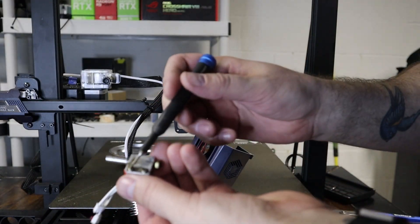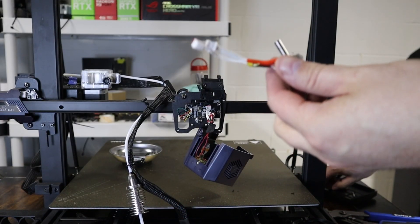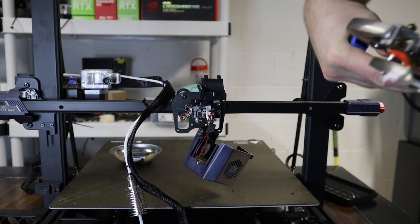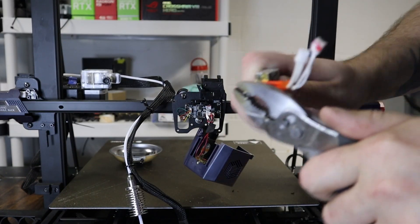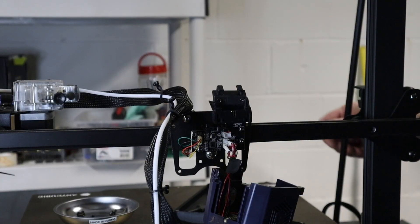After you get this out, there'll be these two screws on the side. We're going to want to loosen these. It's a really hard thing to turn. It's coming, there we go.